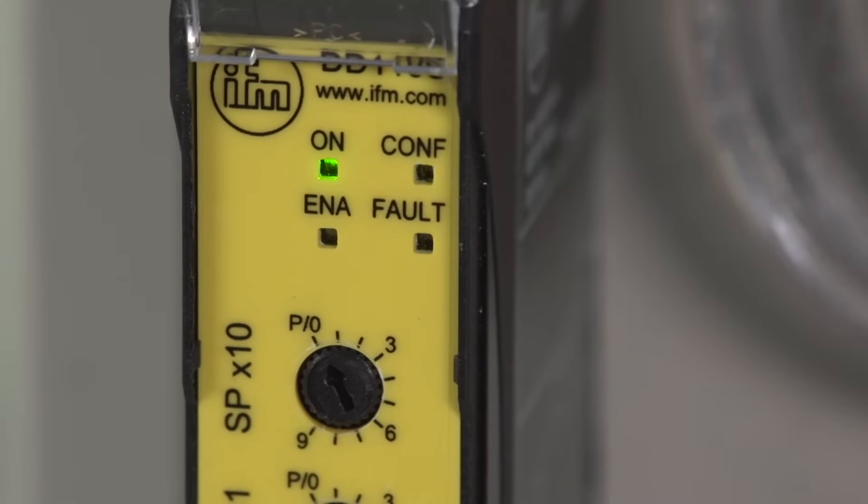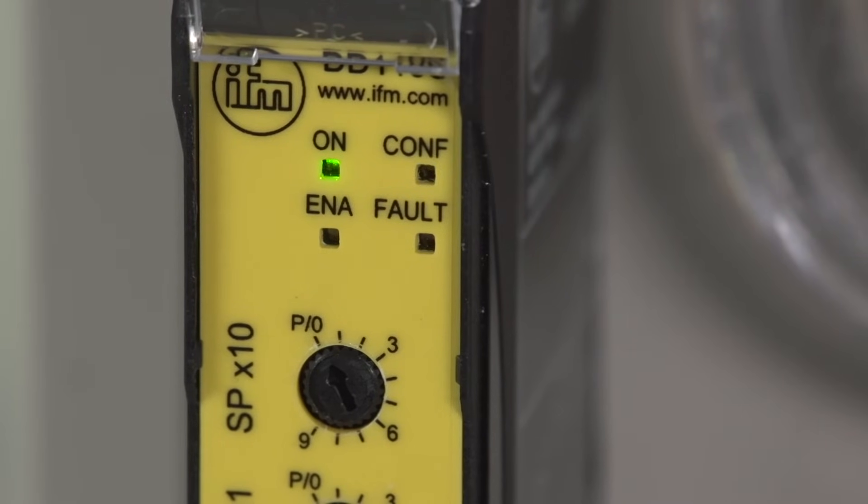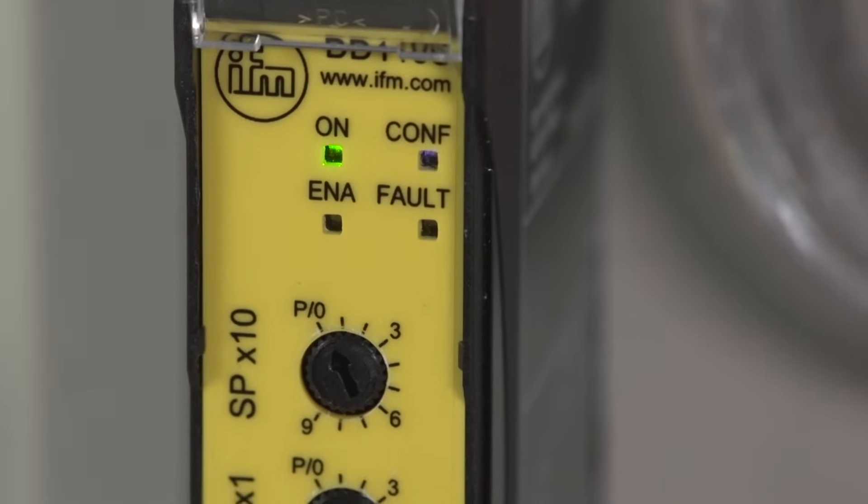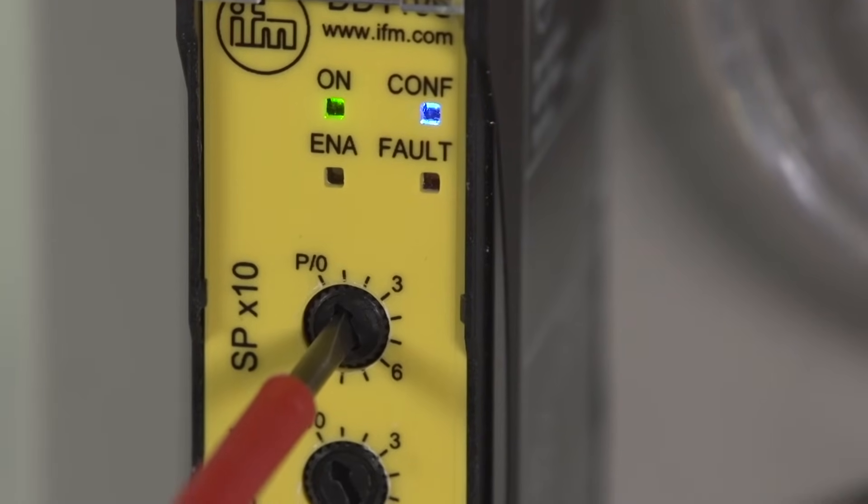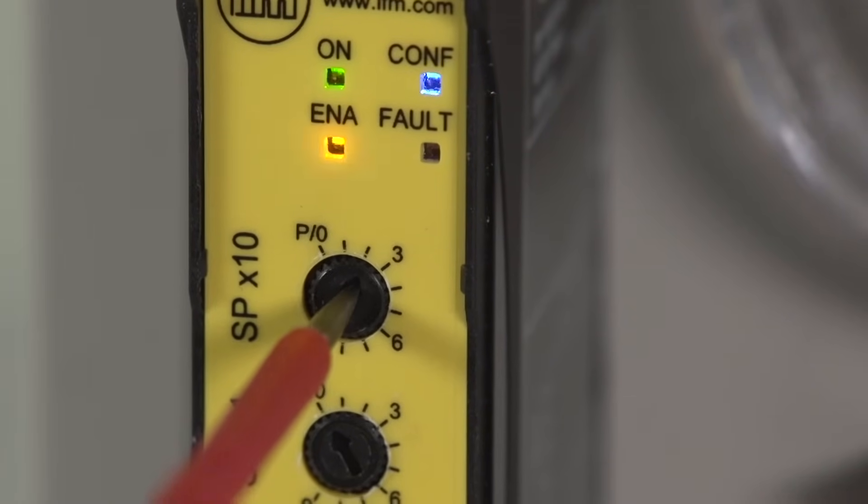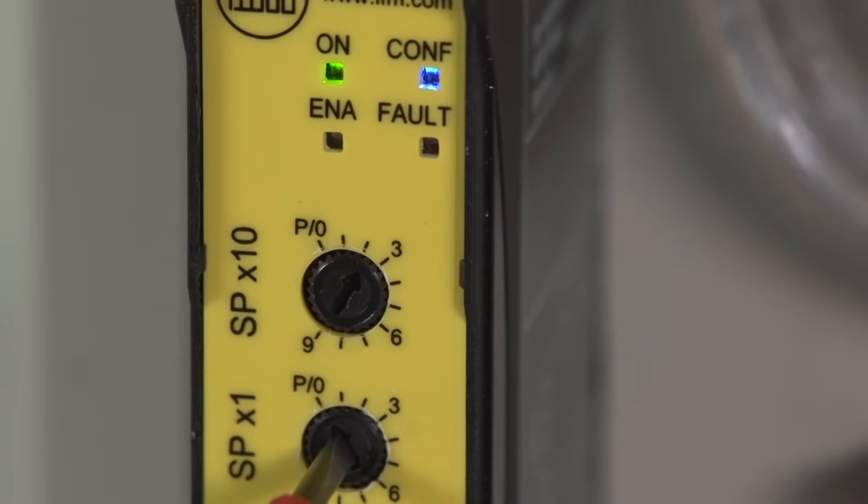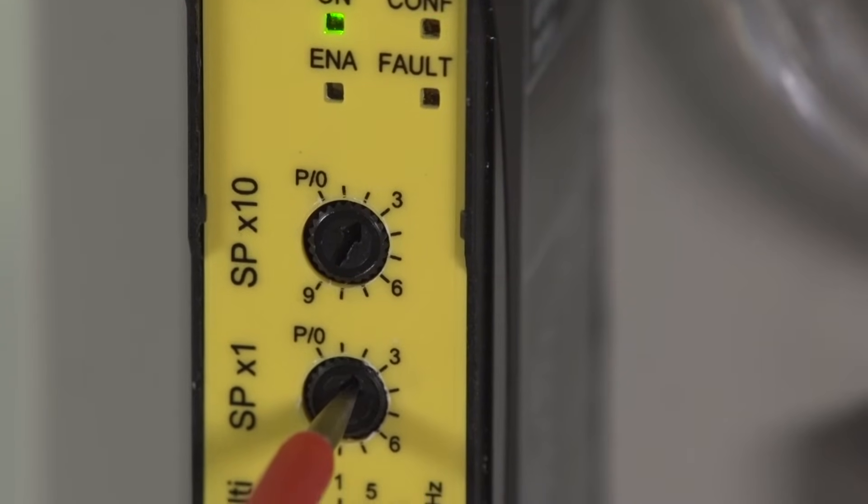Afterwards, all three rotary switches must be set to the correct value. The order in which the rotary switches are changed is not important. With the upper switch, the numerical values from 1 to 99 can be set in increments of 10.